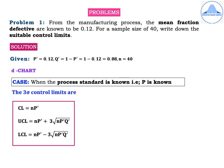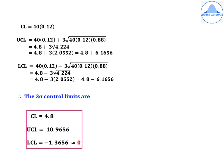The 3-sigma control limits are: CL = NP', UCL = NP' + 3√(NP'Q'), and LCL = NP' − 3√(NP'Q').